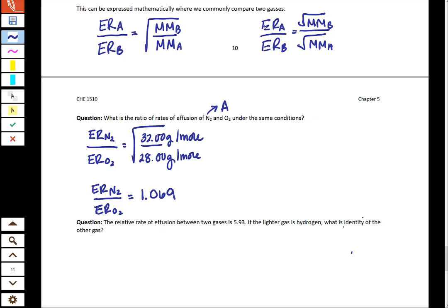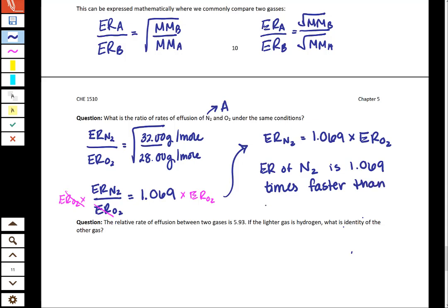What does this number even mean? Sometimes what you'll see people do is multiply both sides by the effusion rate of oxygen. The reason for this is now we can say the effusion rate of nitrogen is 1.069 times faster than the effusion rate of oxygen. That one's a pretty typical kind of straightforward problem that we'll see.